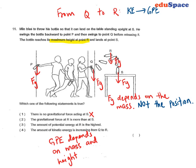In question 11 here, a person is trying to perform a bottle flip. You can see at the different points P, Q, R, and S, I have drawn gravitational force acting on each position.